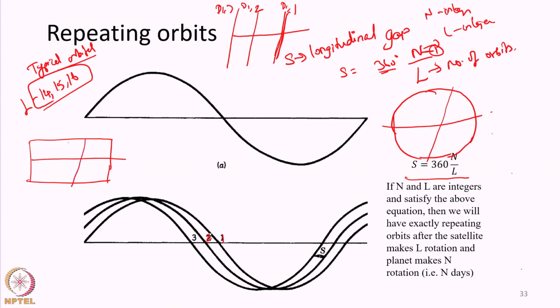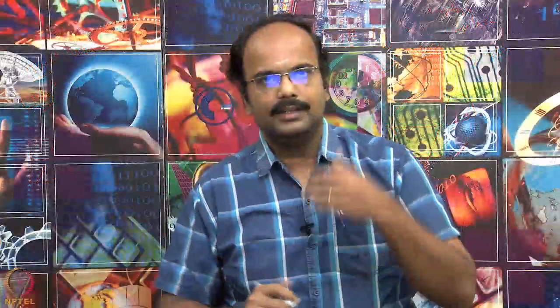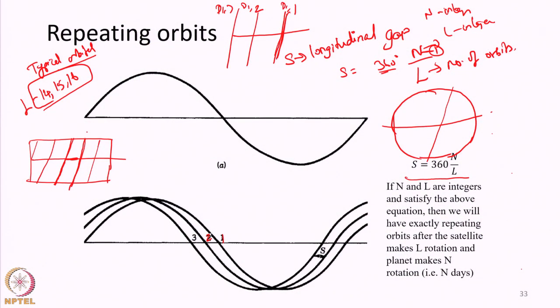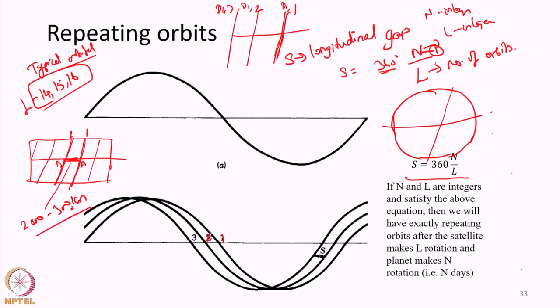Consider the entire globe at the equator: orbit 1 day 1, then orbit 2 day 1, and so on. If N equals 1 and we want daily orbit repetition, the distance between orbit 1 and orbit 2 along the equator will be in the range of 2000 to 3000 kilometers — that is a large gap.